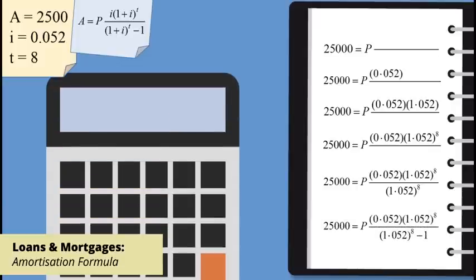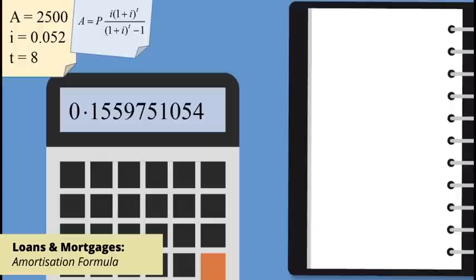Enter the numbers in the fraction into your calculator. Then, pressing the equal sign, you get 0.1559751054. Write the equation with this value in brackets.